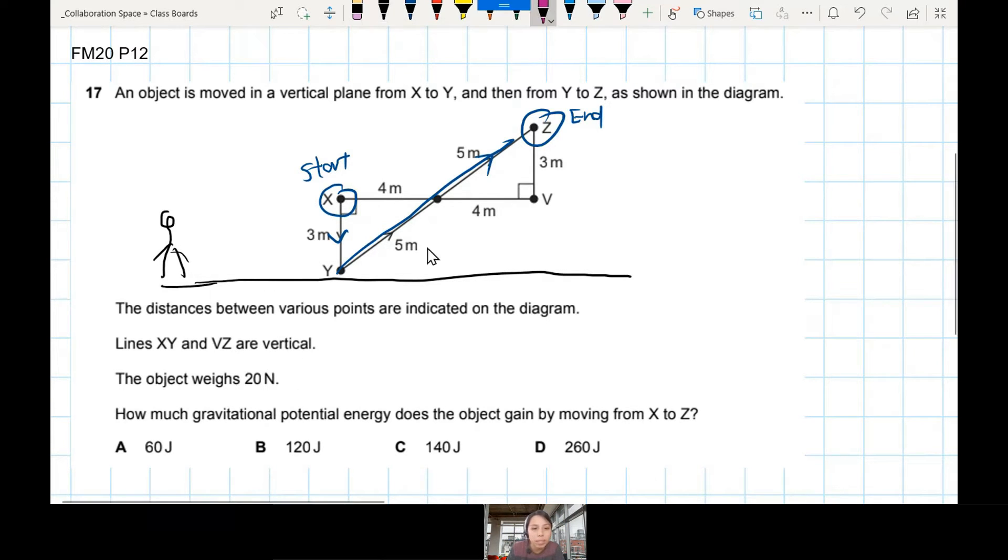Object weighs 20 N. How much GPE does the object gain by moving from X to Z?